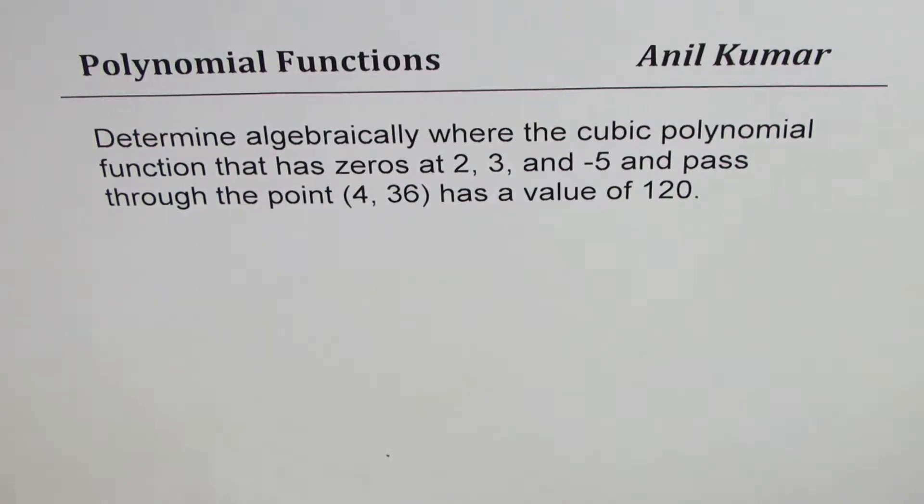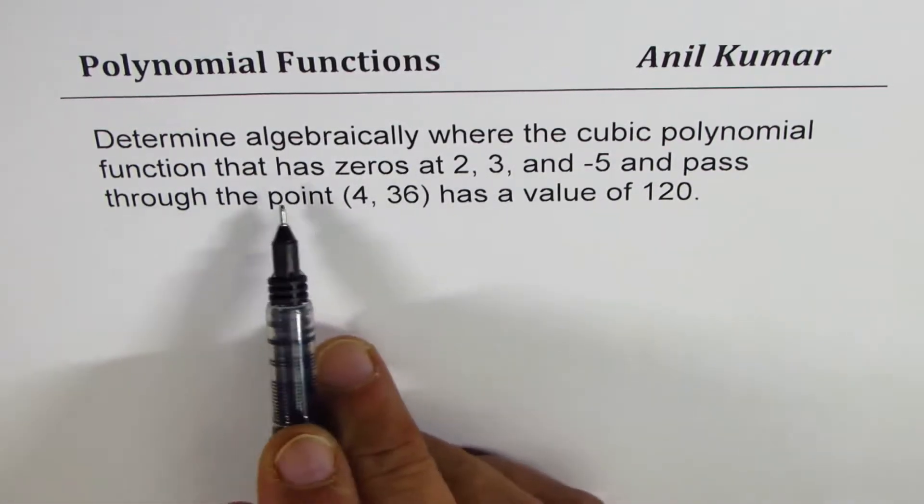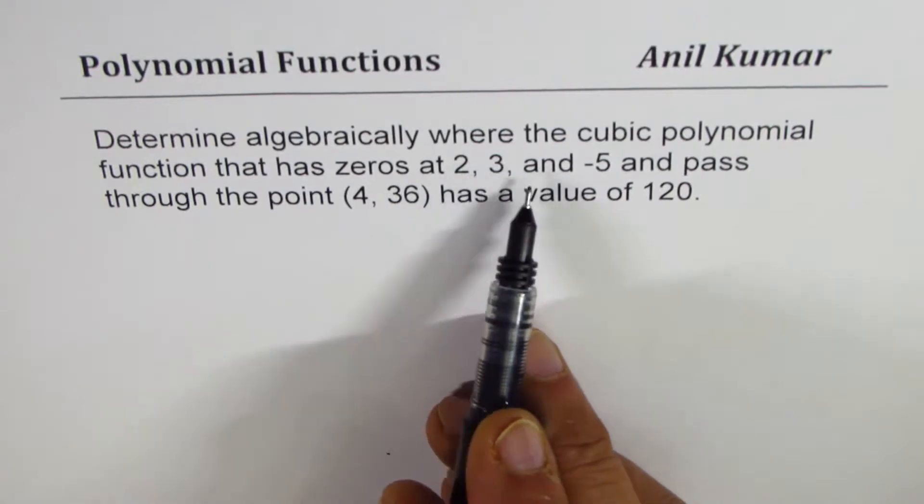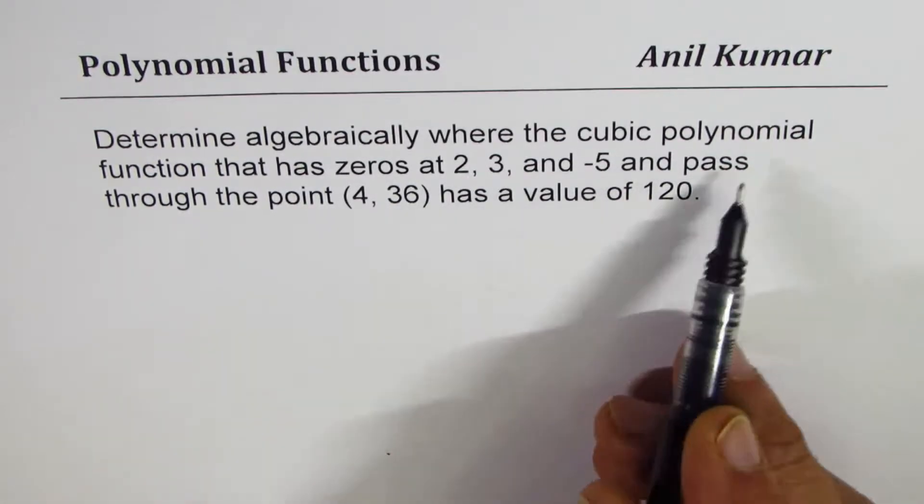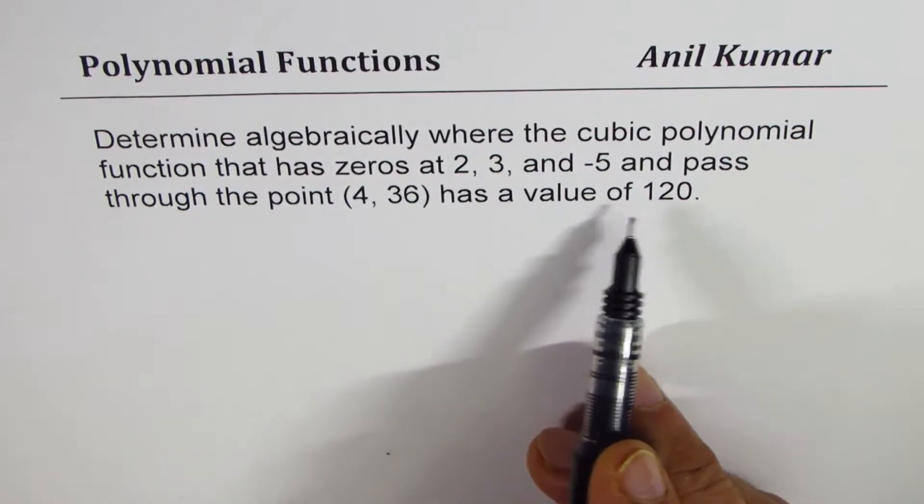The question here is, determine algebraically where the cubic polynomial function that has zeros at 2, 3, and minus 5, and passes through the point (4, 36), has a value of 120.